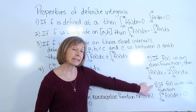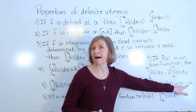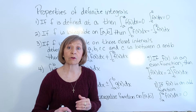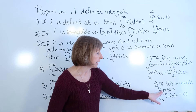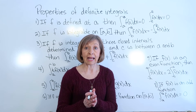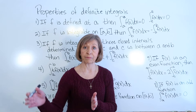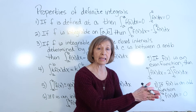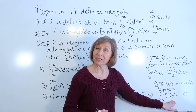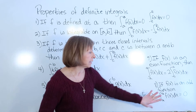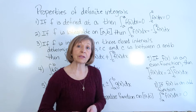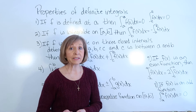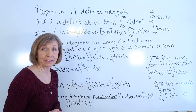Property 8: if f of x is an odd function — symmetric with respect to the origin — and you're integrating over the interval from negative a to a, then your definite integral value will be zero. Now with these properties in mind, let's go to some examples.